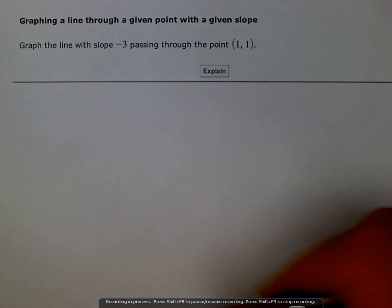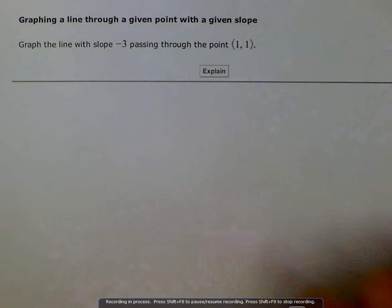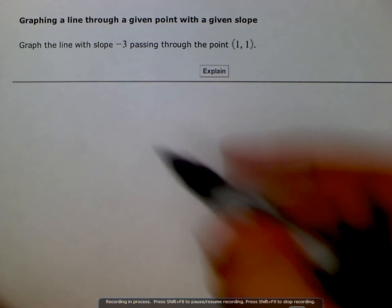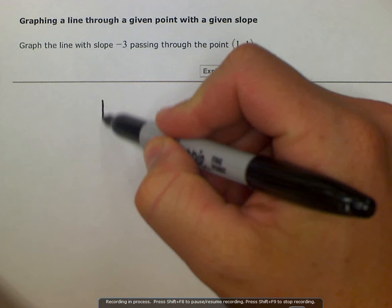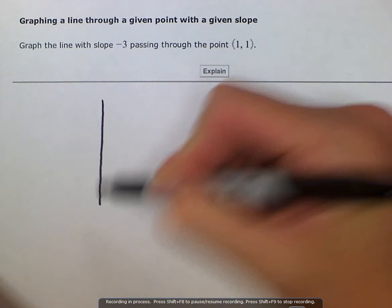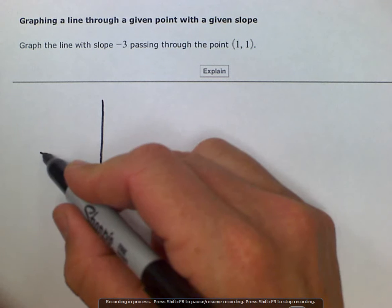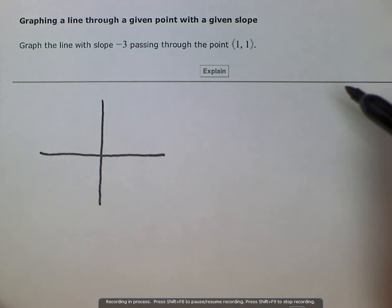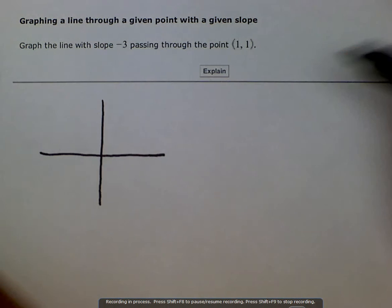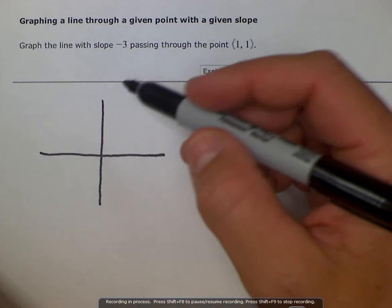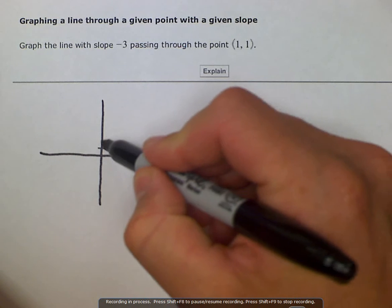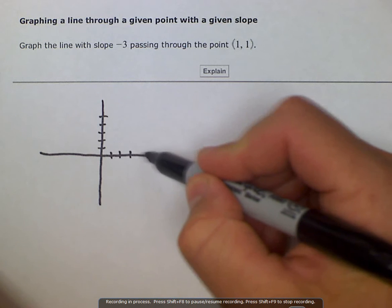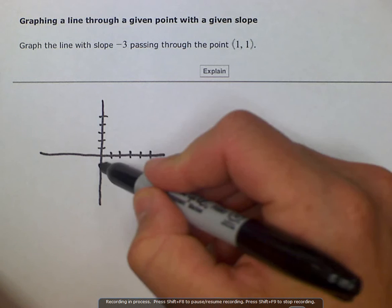So they want us to graph a line through a given point with a given slope. We can do this one of two ways. We can go ahead and graph this line and analyze the graph a little bit more, or we can use something called the point-slope formula, which if you have a point and you have the slope you can just plug it in and get the equation of the line. So let's go ahead and graph first and see what this might look like, and then we can compare the point-slope form.